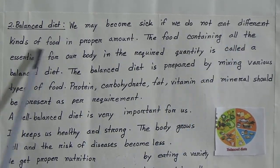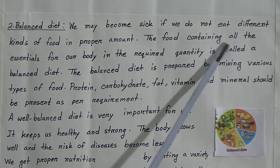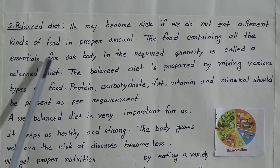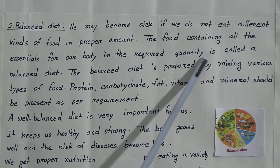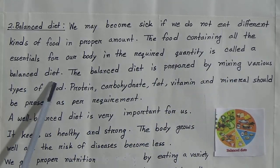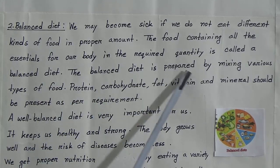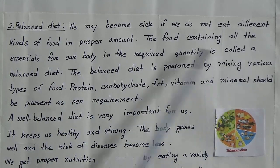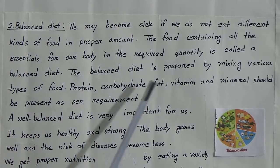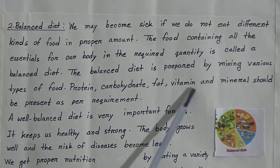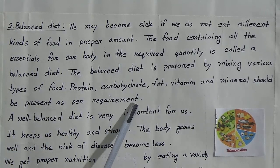The food containing all the essentials for our body in the required quantity is called a balanced diet. A balanced diet is prepared by mixing various types of food. Protein, carbohydrate, fat, vitamin, and mineral should be present as per requirement.